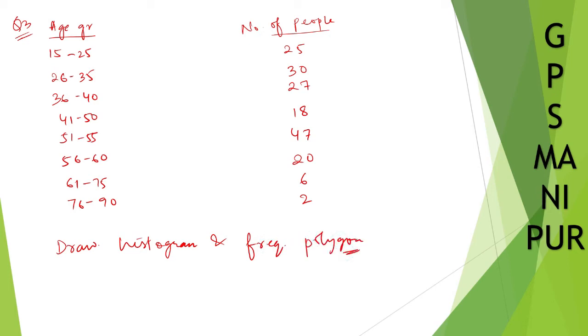First thing you need to look at is that the data is not continuous here — it is 25 and then 26. So we need to make it into continuous class intervals.